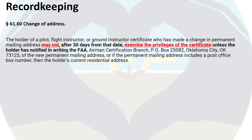FAR 61.60 covers changing your address after you move. You have 30 days from the date of your move to notify the FAA of your new address. If you fail to notify the FAA and 30 days have passed from the date of your move, you may not exercise the privileges of the certificate that you hold.